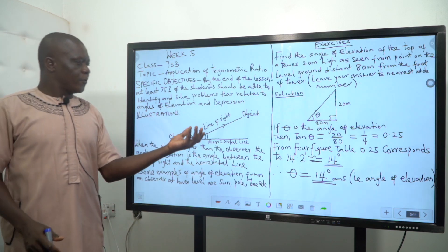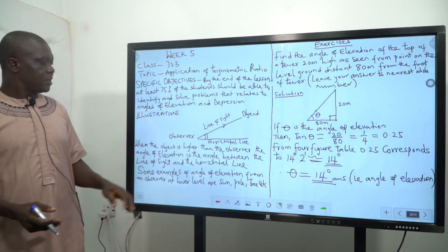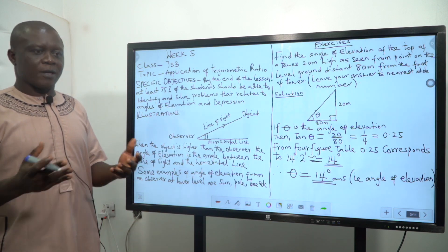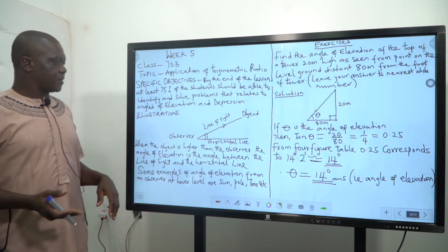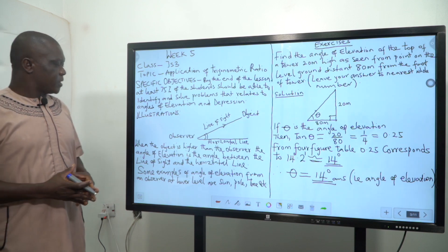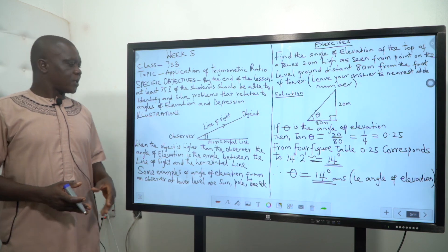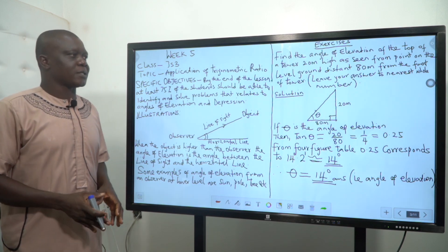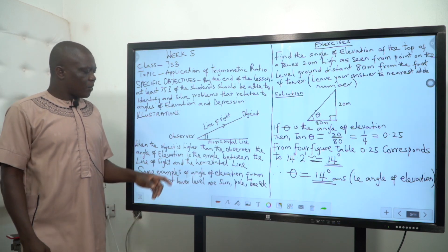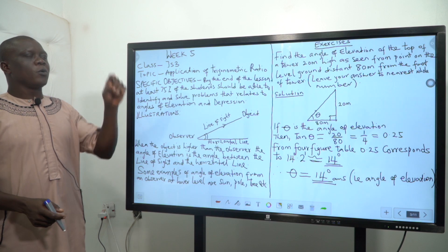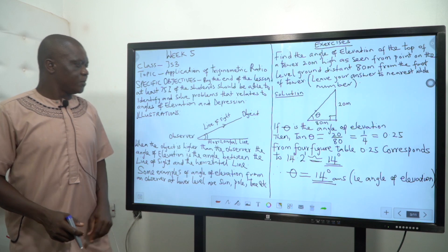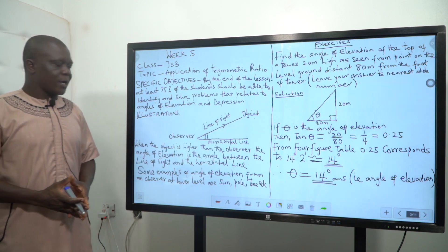Illustration. If you look at the diagram on the board, you can see how I positioned the observer. Observer could be you, could be your mother, your father, or your friend. What we want to demonstrate here is an angle of elevation. The horizontal line is where you are standing.